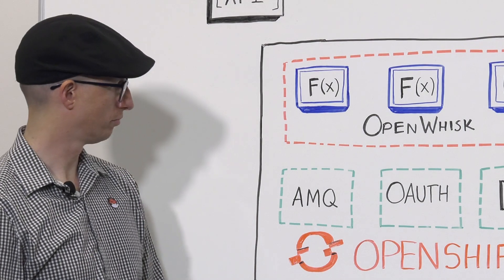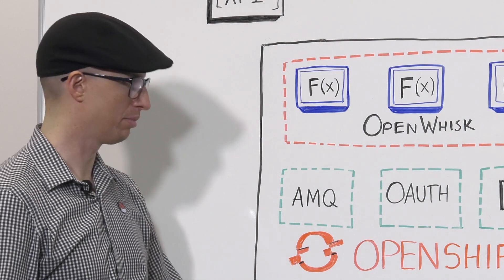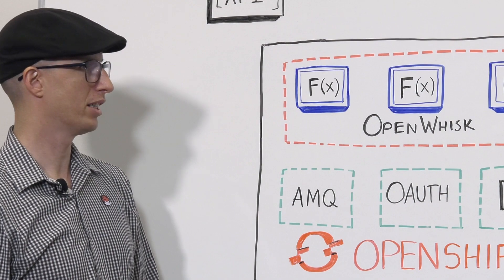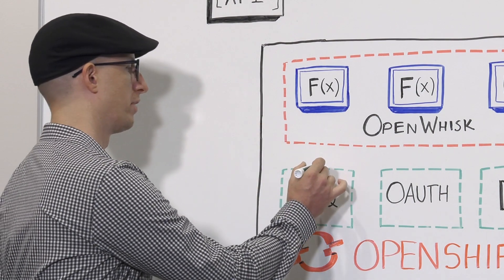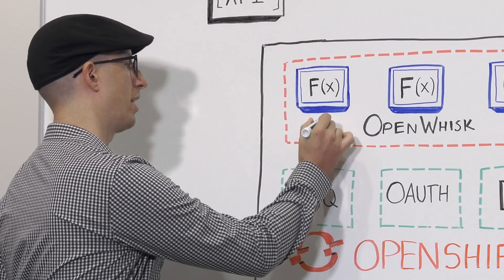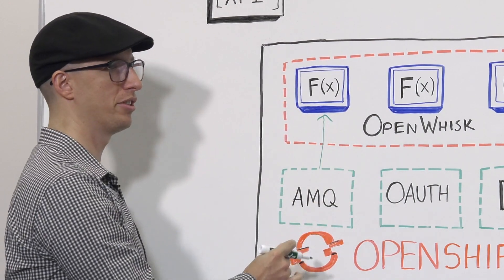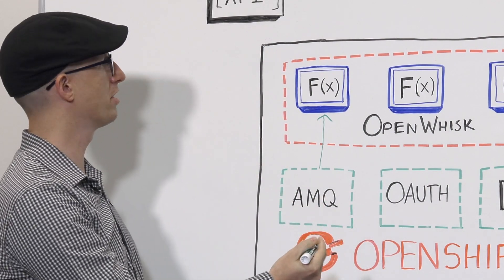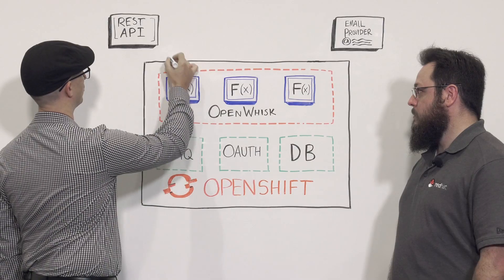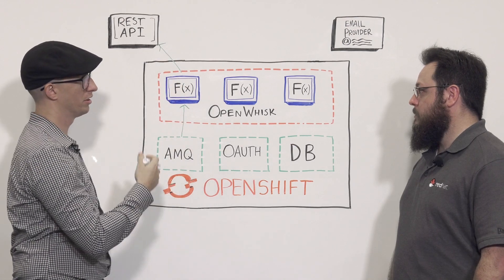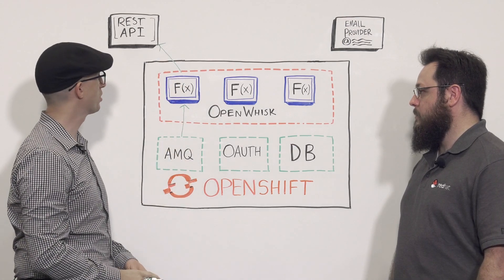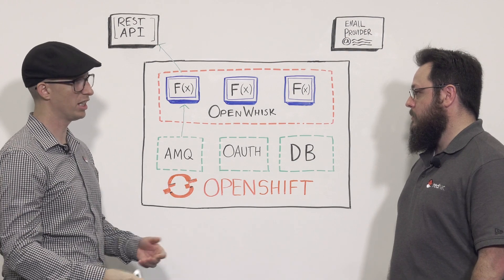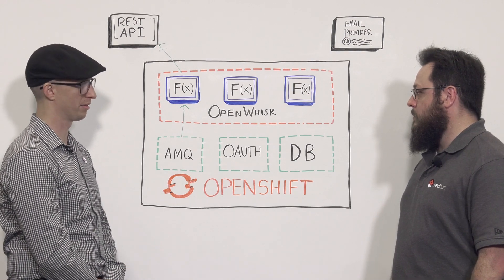If we wanted to talk about a simple example of a way to use functions as a service, you might have a function that monitors your Red Hat JBoss AMQ messaging queue for events, and based on those types of events, trigger a REST API call to your chat service — such as Slack or HipChat or whatever your company may use — so that your team can be notified of important alerts.